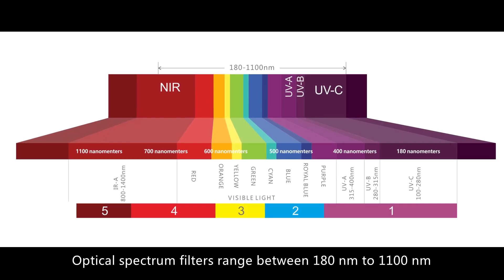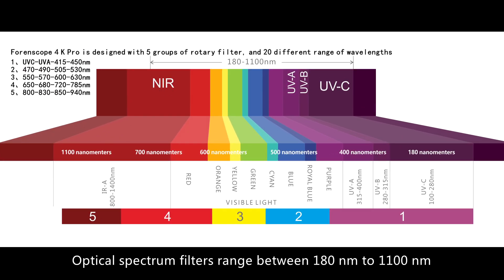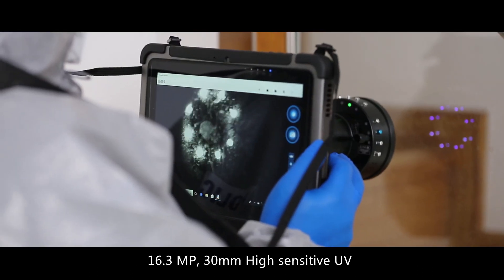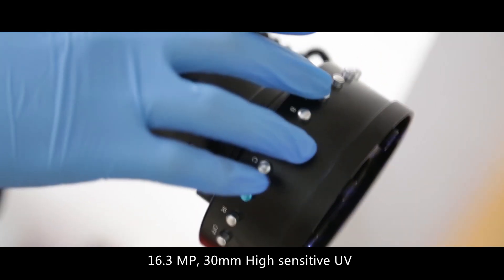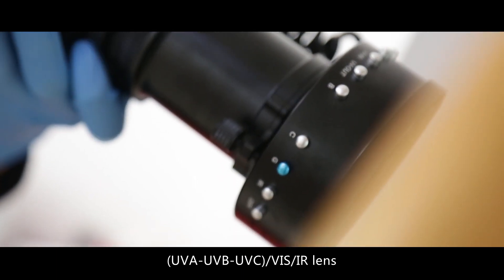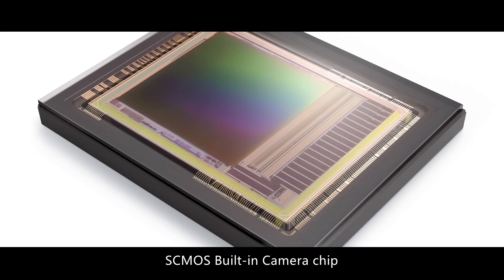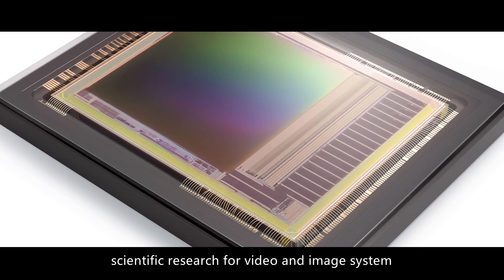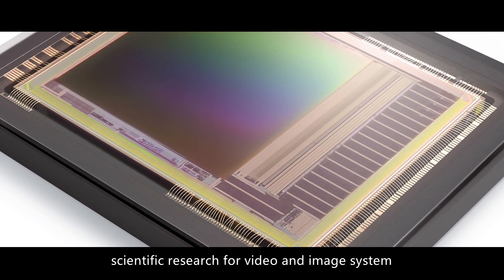Optical spectrum filters range from 180 to 1100 nm can be chosen upon different requirements. 16.3 MP 30mm High Sensitive UV UVA UVB UVC VIS IR Lens SCMOS Built-in Camera Chip Scientific Research Rank in Videos and Images System.